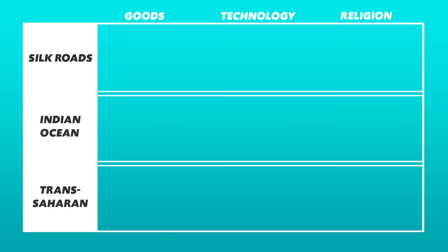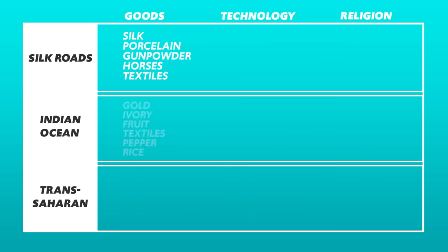In terms of goods, the Silk Roads mainly facilitated the trade of luxury goods like silk, porcelain, gunpowder, horses, and textiles. Across the Indian Ocean, more common goods were transported in addition to luxury goods — for example, gold, ivory, fruit, textiles, pepper, and rice. And the Trans-Saharan routes specialized in goods like horses, salt, gold, and slaves.